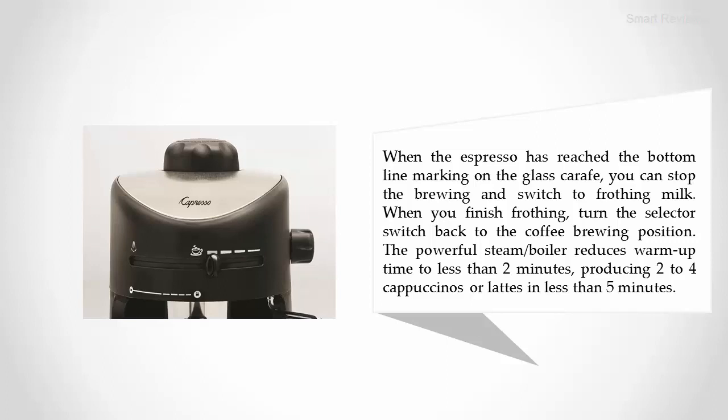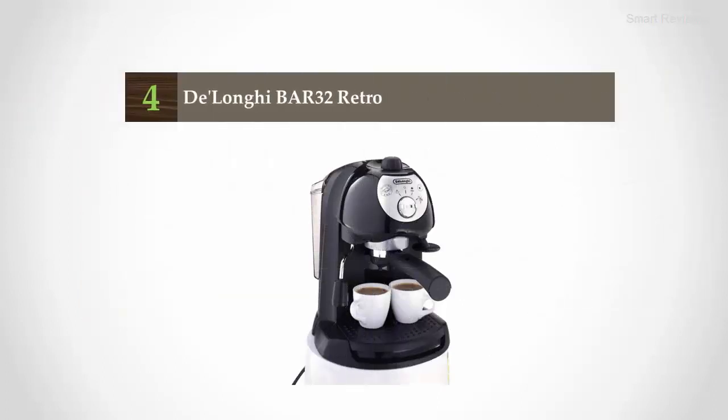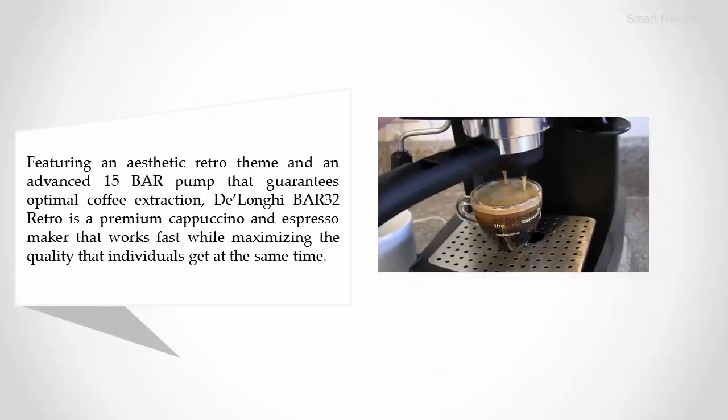Coming in at number 4: DeLonghi BAR 32 Retro. Featuring an aesthetic retro theme and an advanced 15-bar pump that guarantees optimal coffee extraction, the DeLonghi BAR 32 Retro is a premium cappuccino and espresso maker that works fast while maximizing quality.